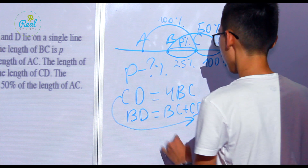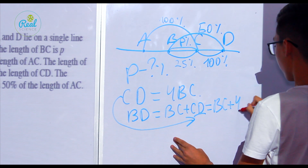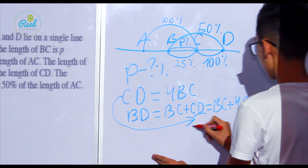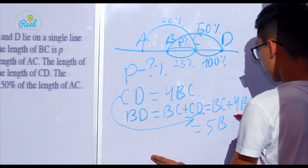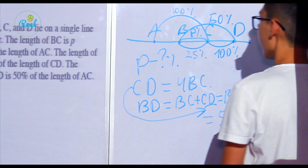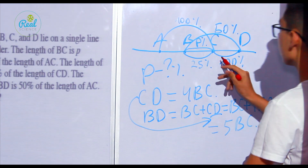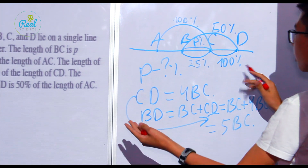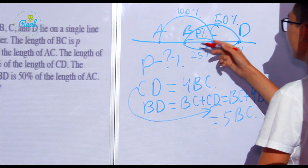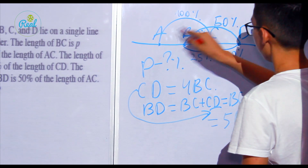BD equals BC plus CD. We know CD, so substituting: BD equals BC plus 4·BC, which equals 5·BC. Then we have to find AC. We know AC is twice BD, because BD is 50 percent of AC.